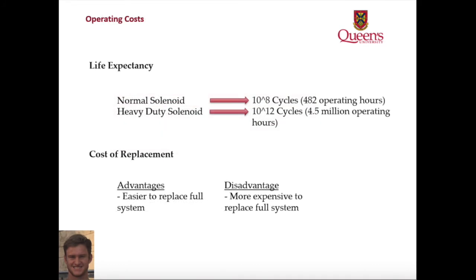We looked into two different types of operating costs: life expectancy and cost of replacement. The lifespan of both the electromagnetic sensors and actuators are largely dependent on application rather than design itself. For our operating conditions, we found solenoids have a range of life expectancies. A heavy-duty solenoid can last up to 10 to 12 cycles, or under our operating conditions, 4.5 million hours. An advantage to using a hybrid system is that in the event of a failure, they are easier to replace as they are added and removed as an entire unit. The disadvantage is that the components cannot be replaced individually, and therefore it will cost more.